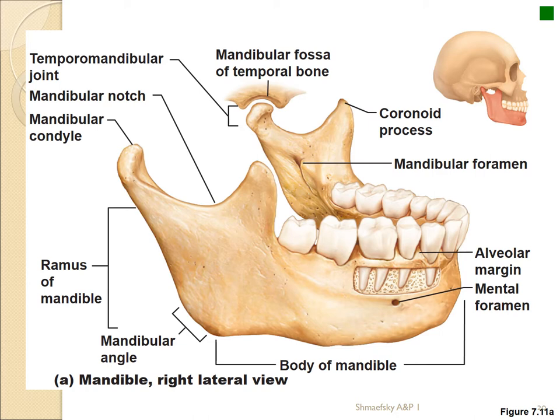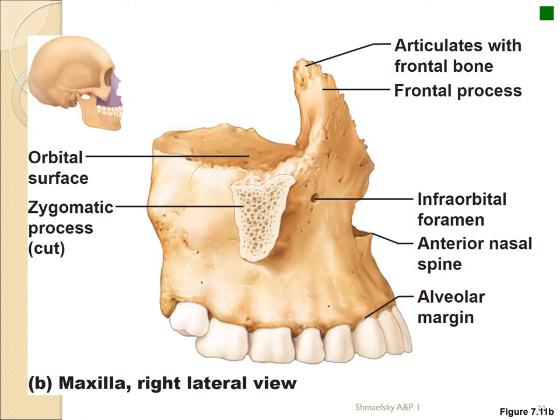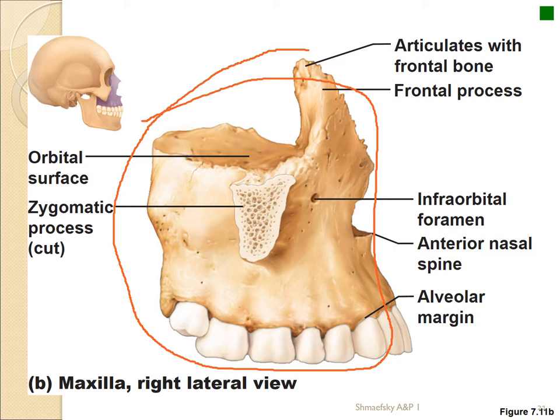Looking at the mandible alone, you can see the temporomandibular fossa — this is one of the only movable joints in the skull. Interestingly, the mandible is not really a true skull bone; it's related to the hyoid, clavicle, and ribs developmentally. Pay attention to the ramus, and know that the mental foramen is important because nerves and blood vessels pass through there, particularly those involved in dentistry and shingles.